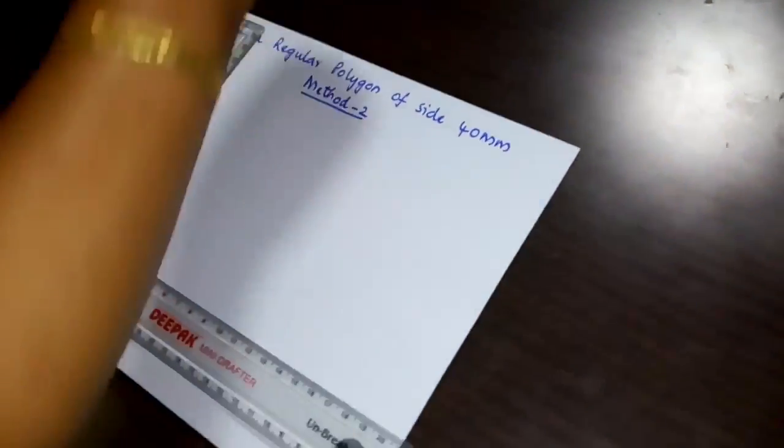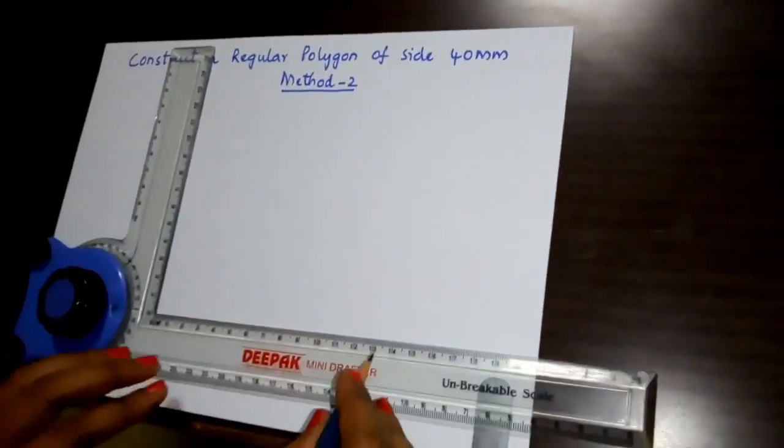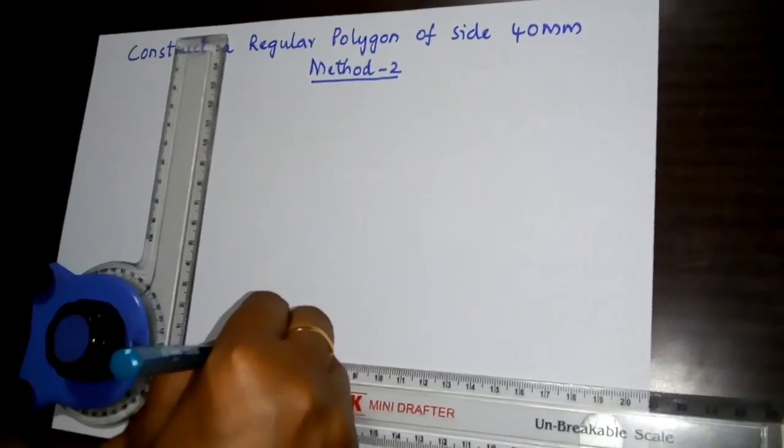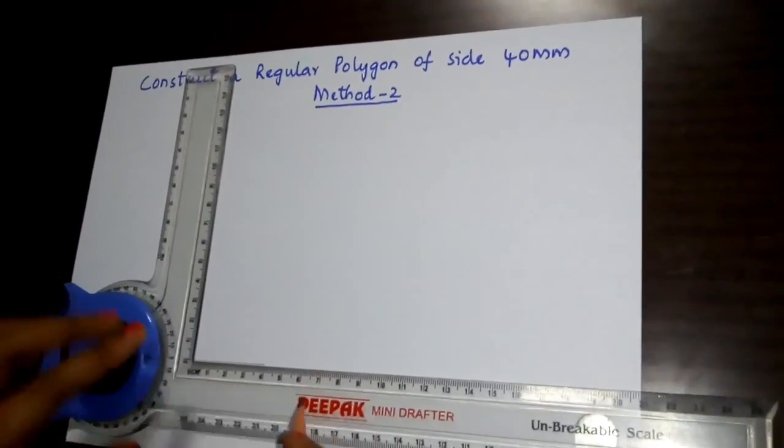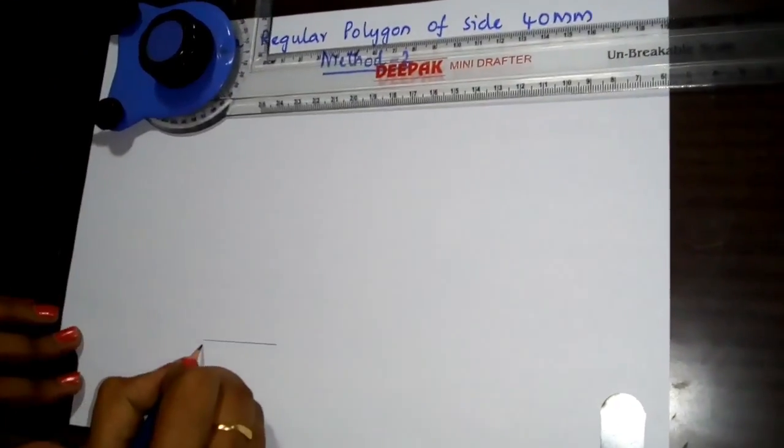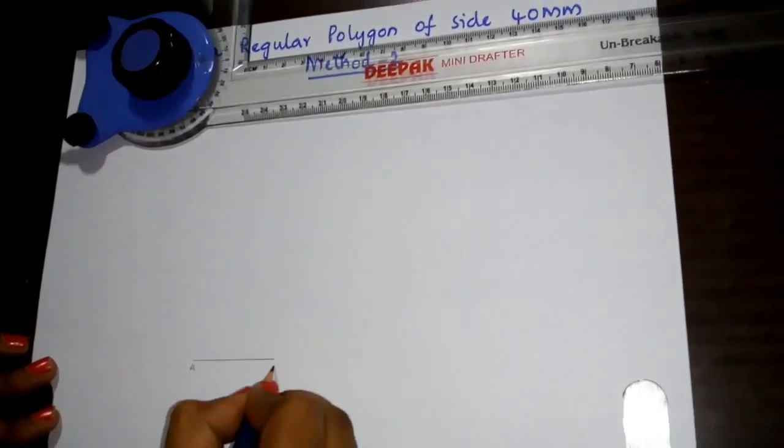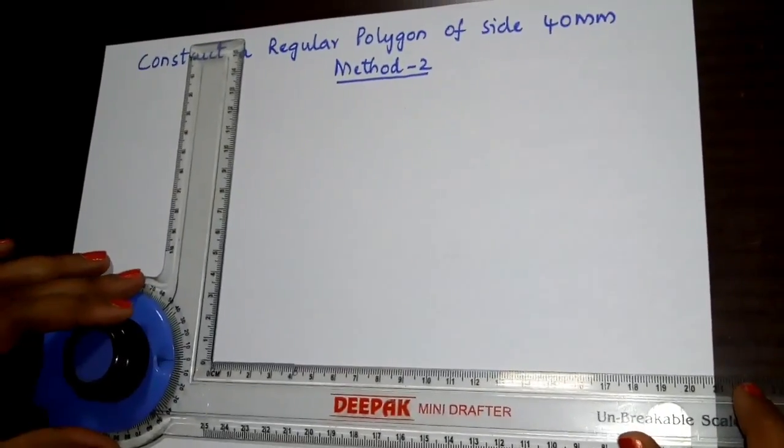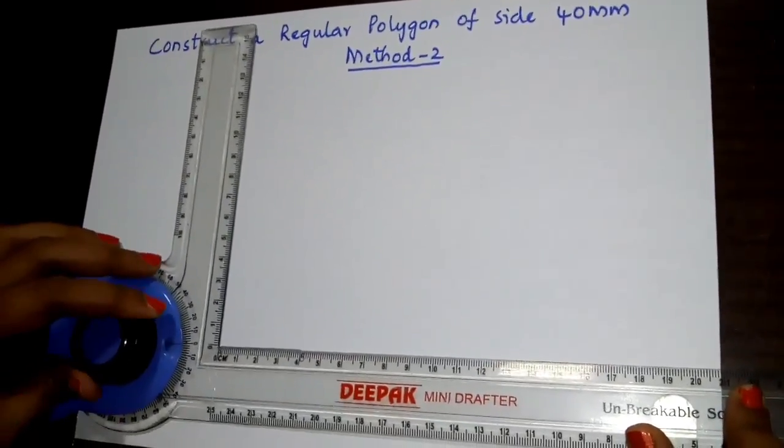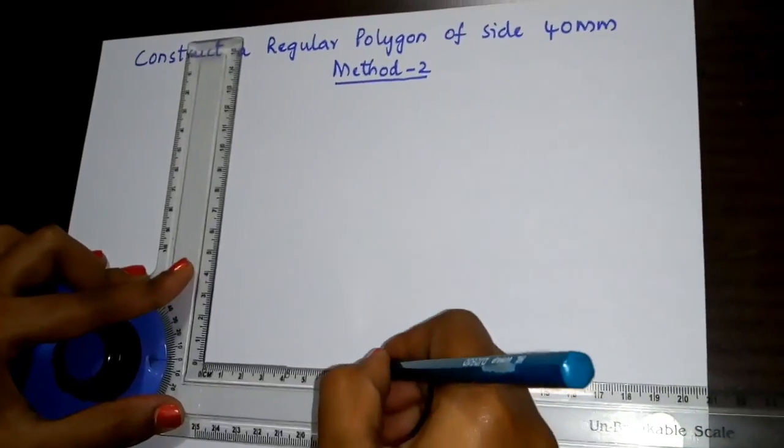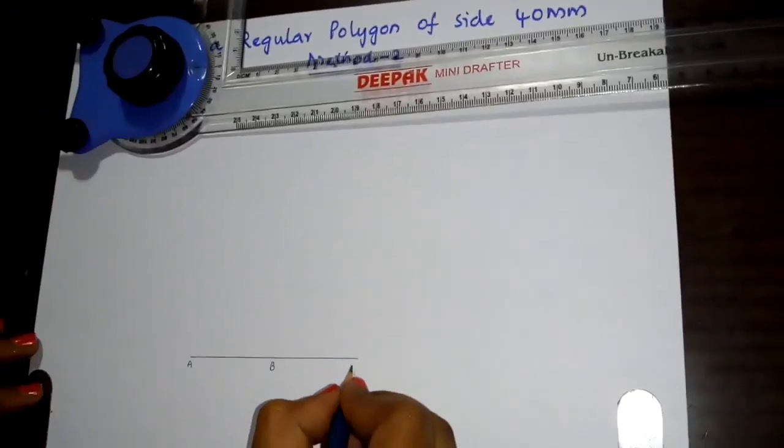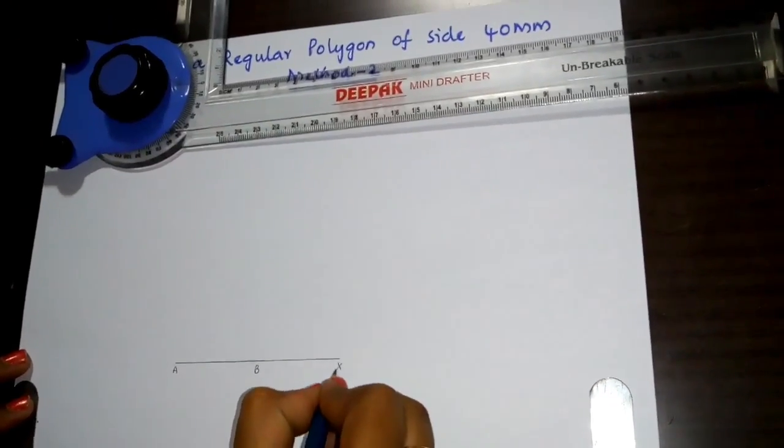For this, I have to draw a line of 40mm and name it as AB. After that, extend the line AB another 40mm, up to 80mm. Name this point as X.